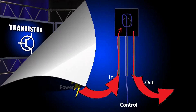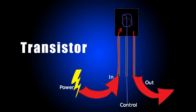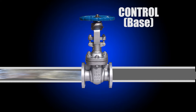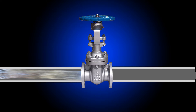A transistor is very simple. All it is is a component that has three sides. One is to control the flow of the other two sides. You can think of it as like a shutoff valve — the shutoff is the control, that's called the base on one type of transistor. The other two sides would be like the two sides of a pipe. You use the shutoff to turn it on and shut it back off, and you can turn it half the way on or all the way on. That's basically transistors.